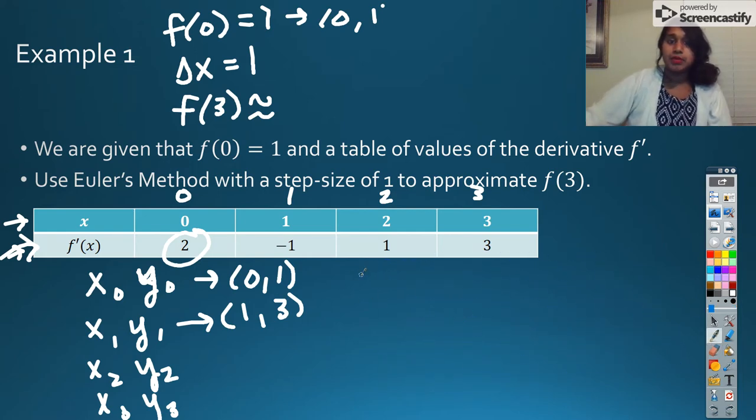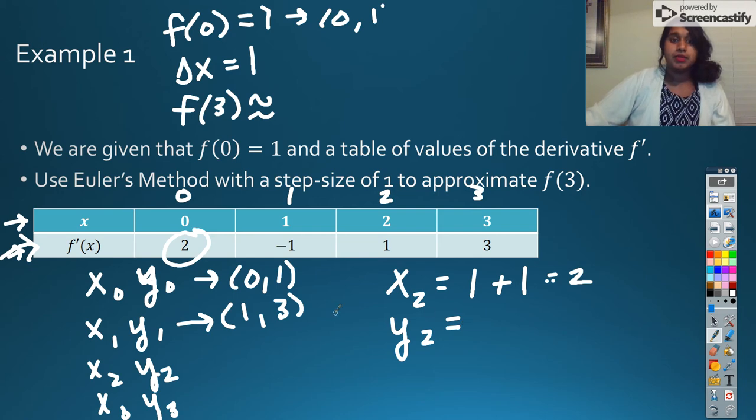Now we do that whole pattern all over again. I think I'm going to run out of time, but I'm going to try and go as quickly as possible. So my X2, my new X is going to be the previous X, so X1, 1 plus step size. So that's just going to be 2. Here's where it gets funky. Here's my Y2. That's going to be the previous Y, so 3, plus the slope at that point times 1. Well, the slope at X1 is negative 1. So that becomes plus negative 1, which is the same as saying 3 minus 1, which is 2.